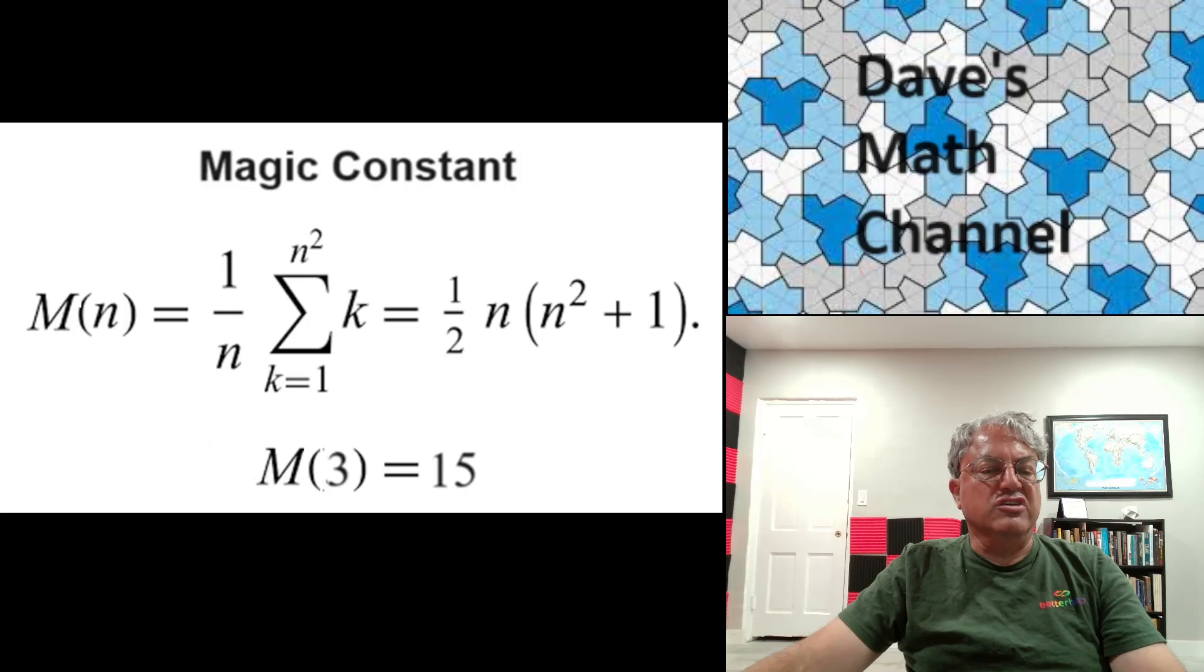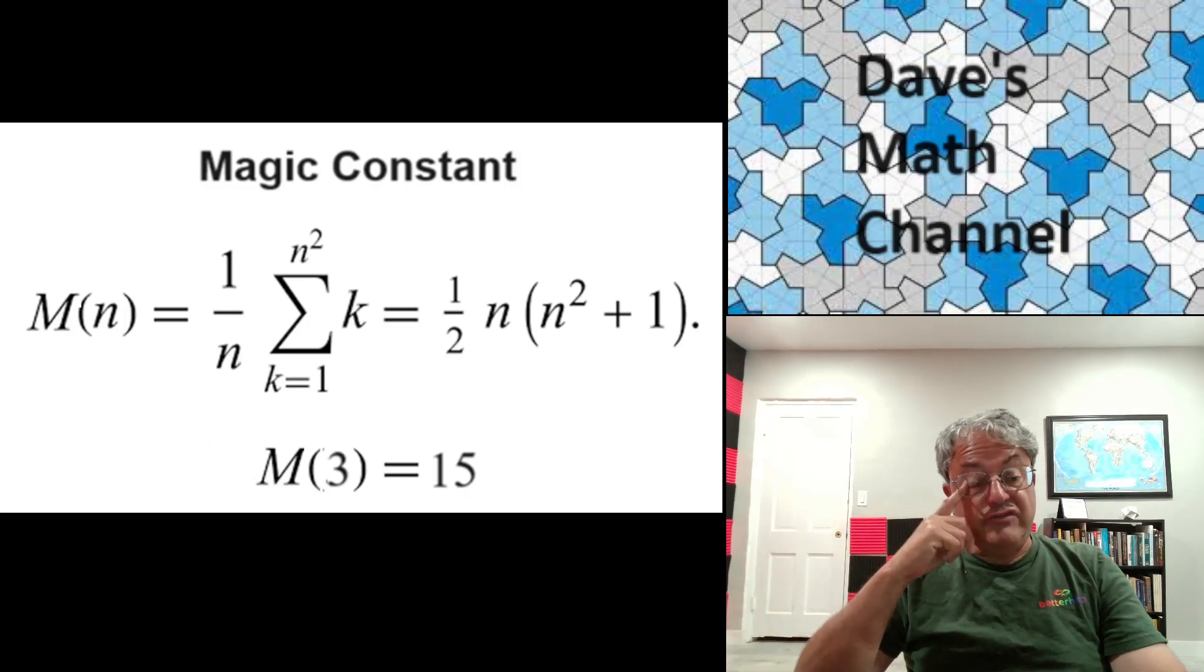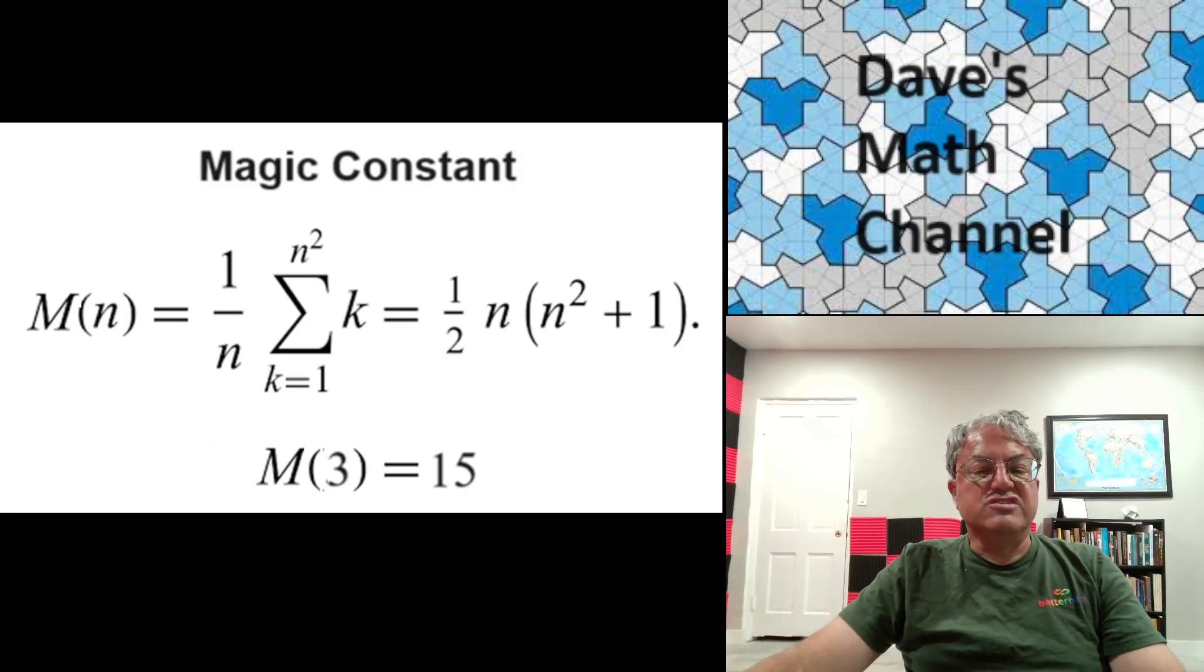The way you get it is you first sum up all the entries of the square. That's easy because all the entries are from 1 to n squared. So you're just summing k, k going from 1 to n squared. That's a triangular number. There's a formula for those numbers. It's just 1/2 times n squared times (n squared + 1) in this case.